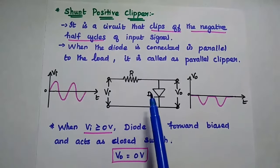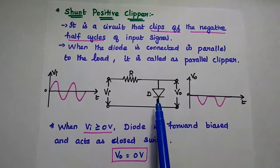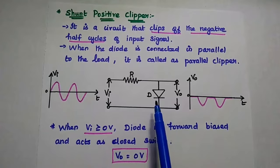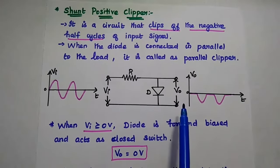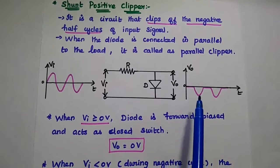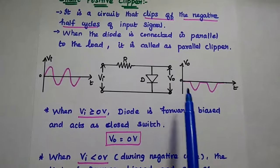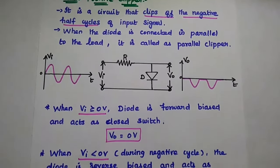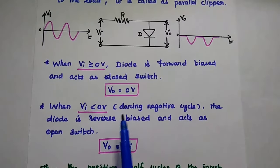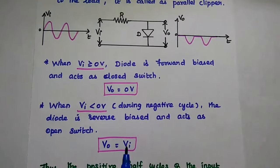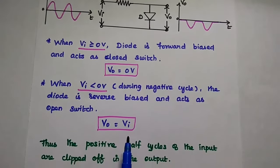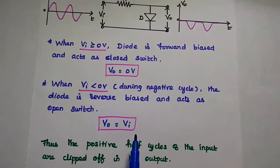During the negative half cycle, the diode is reverse biased, meaning it acts as an open switch. There is no current flow through the diode, so all the input appears at the output side. During the negative half cycle, we get the output as a negative signal. When the input voltage is less than 0 volts — that means during the negative half cycle — the diode is reverse biased and acts as an open switch, and the output is simply the input.